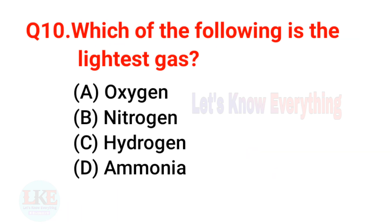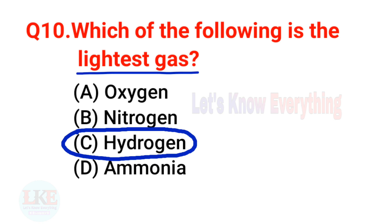Question 10: Which of the following is the lightest gas? A) Oxygen, B) Nitrogen, C) Hydrogen, D) Ammonia. The right answer is option C, Hydrogen. Hydrogen is the lightest gas.